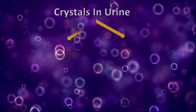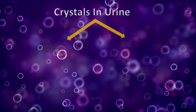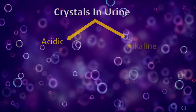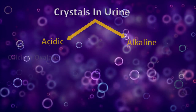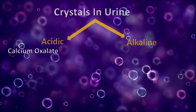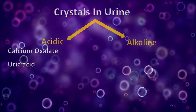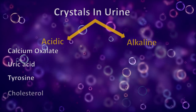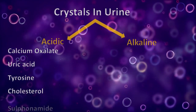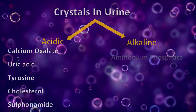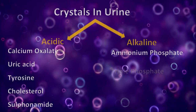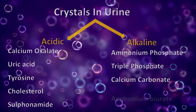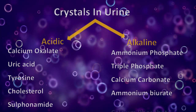Crystals in urine can be divided into two major groups: crystals which present in acidic urine and alkaline urine. Acidic urine crystals are calcium oxalate, uric acid, tyrosine, cholesterol, and sulfonamide. Alkaline urine crystals are ammonium phosphate, triple phosphate, calcium carbonate, ammonium biurate, and calcium phosphate.